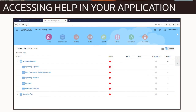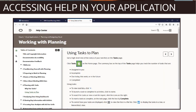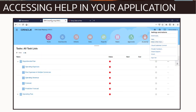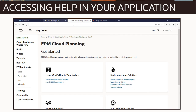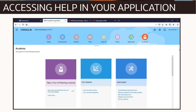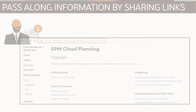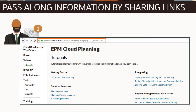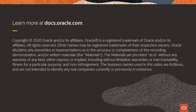Now let's explore help in your business process application, where you can click Help on this topic to get task-oriented assistance and contextual information about the page that you're using, or you can click Help to go to the Help Center. The Academy also offers useful videos and links to the Help Center. Remember, pass along helpful information by sharing documentation, video, video playlist, and other links. To learn more, visit docs.oracle.com.